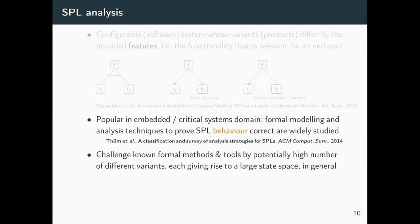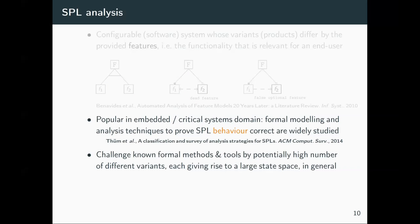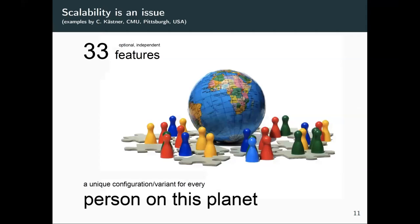Why look at behavioral models? Software product lines are popular in embedded and critical systems domains, and formal modeling and analysis techniques to demonstrate correct behavior are widely studied. Behavioral correctness is challenging because we potentially have a very high number of different variants, and each variant can itself be large in terms of state space. This gives us a scalability issue in two directions.